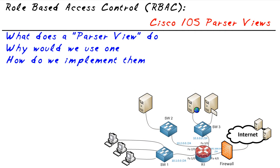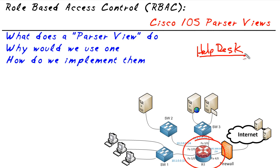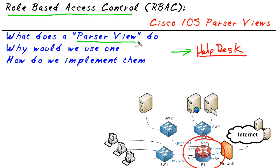Let's say that you and I have been given a challenge by our manager to do the following. We want to create a situation where this router can be managed by the Help Desk. However, we don't want to give the Help Desk full access — we just want to give a few specific commands to the Help Desk. The simplest way to implement this in a very granular fashion for role-based access control for anyone at the Help Desk would be to use something called a parser view.